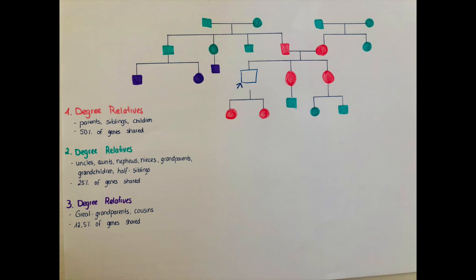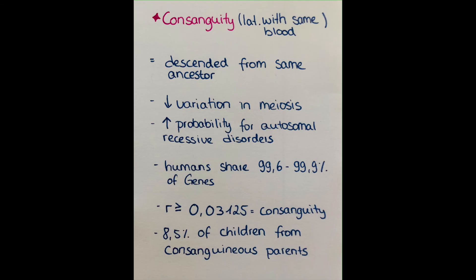The coefficient of relation is used to define when a union of two people is considered consanguineous. Consanguinity comes from Latin and means 'with the blood,' meaning someone is descending from the same ancestor. In genetics, it means there is a reduction in variation due to meiosis that occurs because of sharing a genetic pool — two people with quite similar genetic information having offspring together.